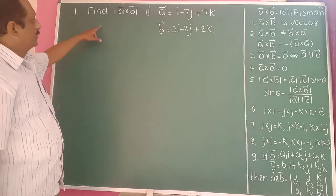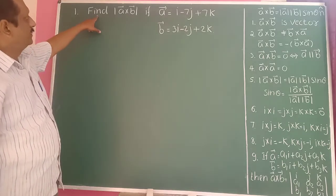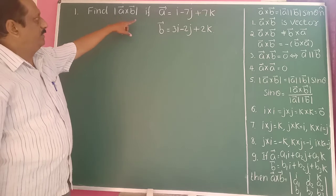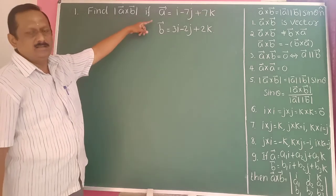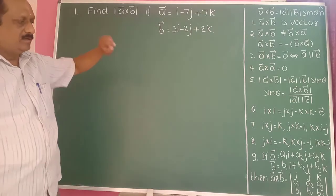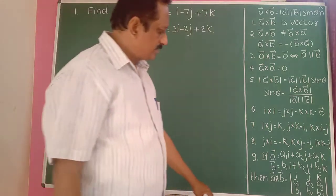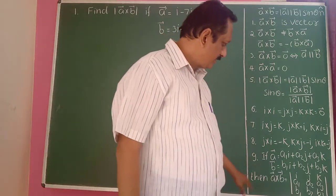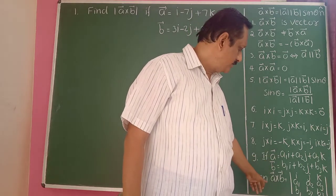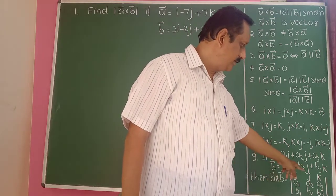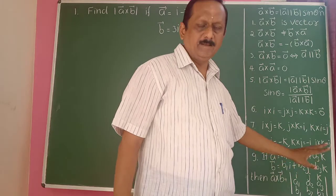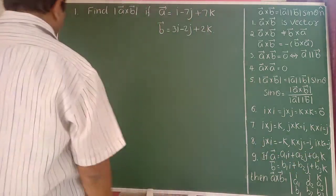In this example, we need to find the modulus of a bar cross b bar, where a bar and b bar are two given vectors in component form. Therefore, here is the formula: if two vectors are in component form, then a bar cross b bar is a determinant with i, j, k in the first row, a1, a2, a3 in the second row, and b1, b2, b3 in the third row.